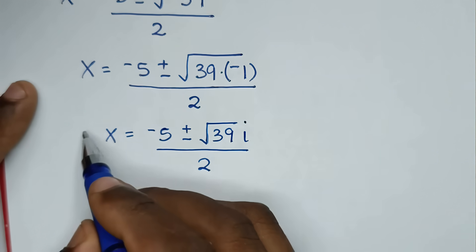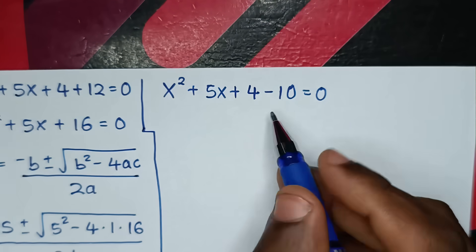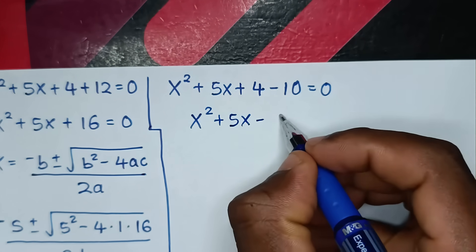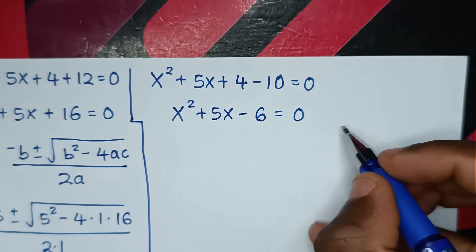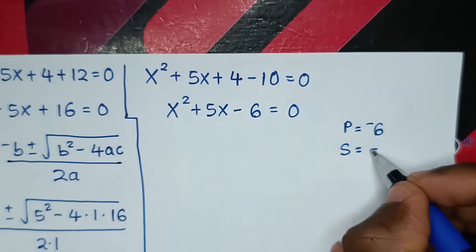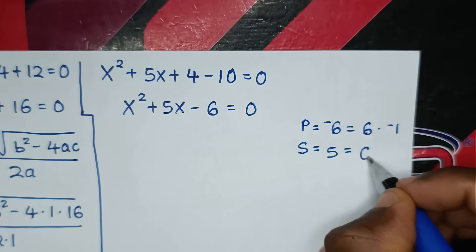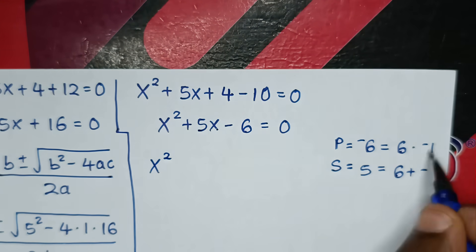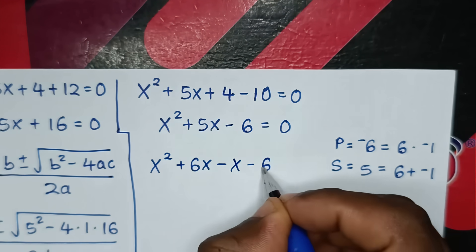Now let's solve the second equation x² + 5x - 6 = 0 using grouping and factorization. Product = 1 × (-6) = -6, sum = 5. Factors 6 and -1 work: 6 × (-1) = -6 and 6 + (-1) = 5. So 5x becomes +6x - x, giving x² + 6x - x - 6 = 0.